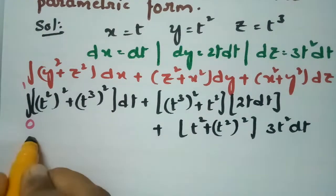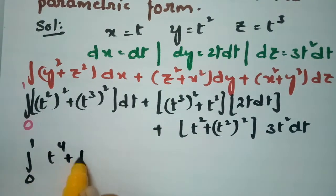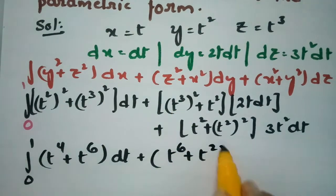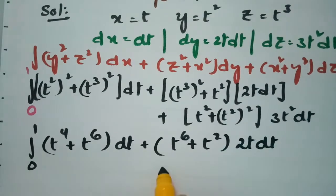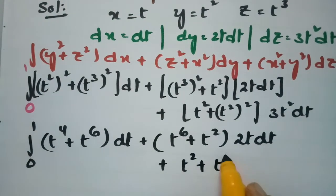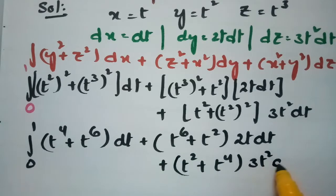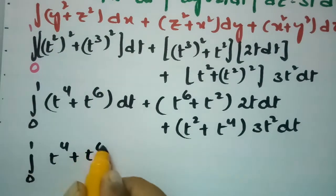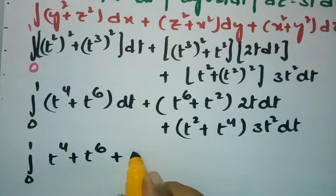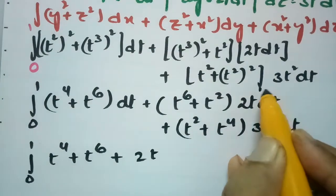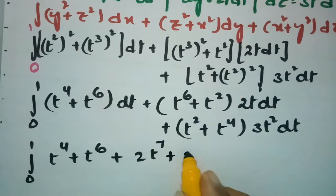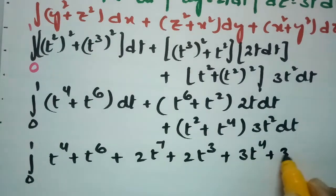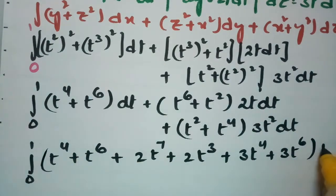Now calculating the integral from 0 to 1: the first term gives t⁴ + t⁶ multiplied by dt; the second term gives (t⁶ + t²)·2t·dt; and the third term gives (t² + t⁴)·3t²·dt.